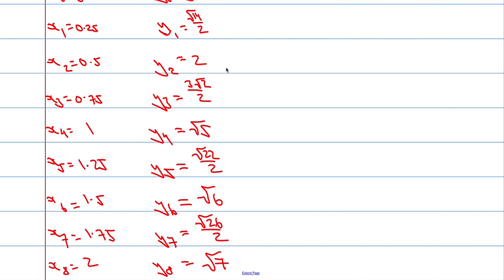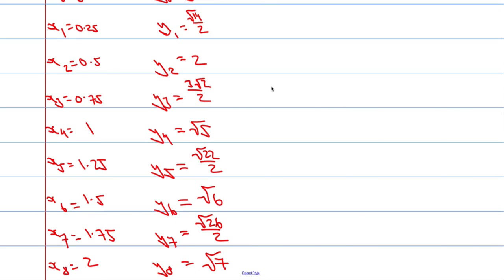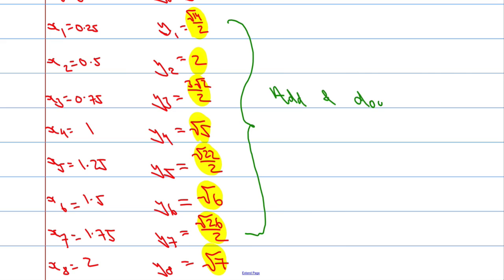With the table complete, we apply the trapezium rule. We add up all the middle y-values (y₁ through y₇) — not the first and last — and then double that sum. Adding all those middle terms together and doubling gives us the interior part. I'll pause briefly to add these up on the calculator.